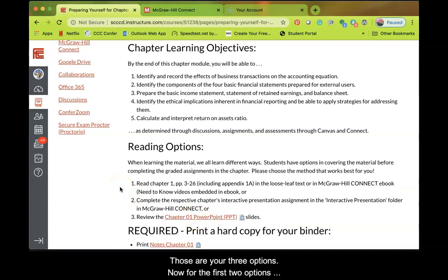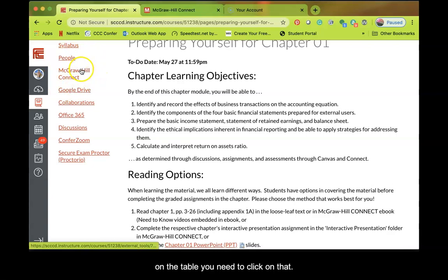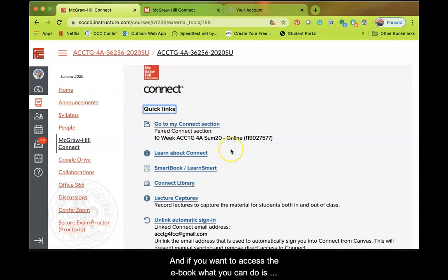So those are your three options. Now for the first two options, what you'll need to do is there is a McGraw-Hill Connect link on the table. You need to click on that.